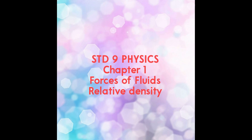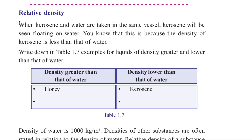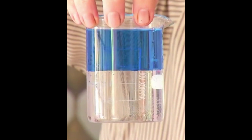Today we are discussing the topic of relative density. We know that when kerosene and water are taken in the same vessel, kerosene will always be seen floating on water. The reason for this is that the density of kerosene is less than that of water, which is why kerosene floats over water.